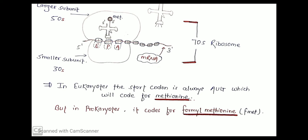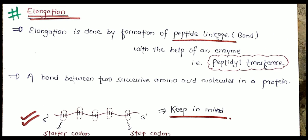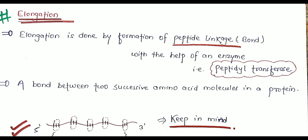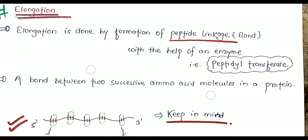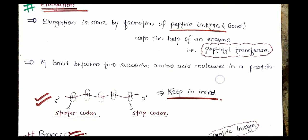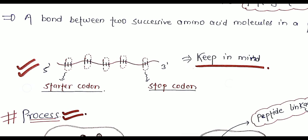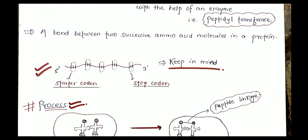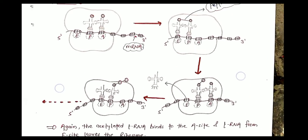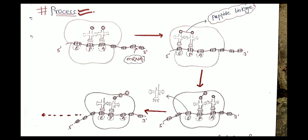Elongation involves the formation of a peptide linkage — a bond formed between two successive amino acid molecules in a protein — with the help of the enzyme peptidyl transferase, which is a very important enzyme. Also important to keep in mind: at the 5' end of mRNA there is always a start codon, and at the 3' end there is always a stop codon.